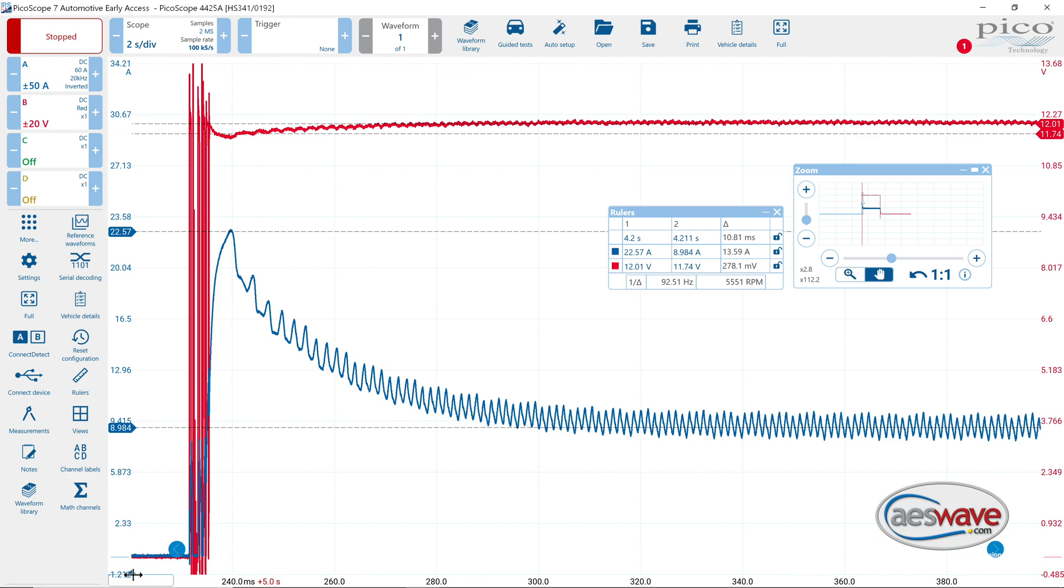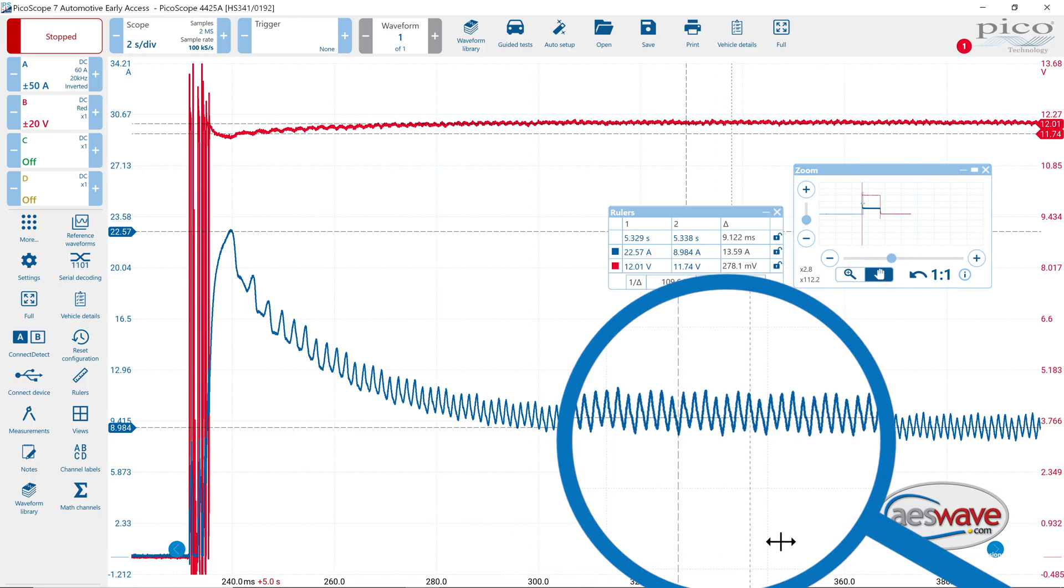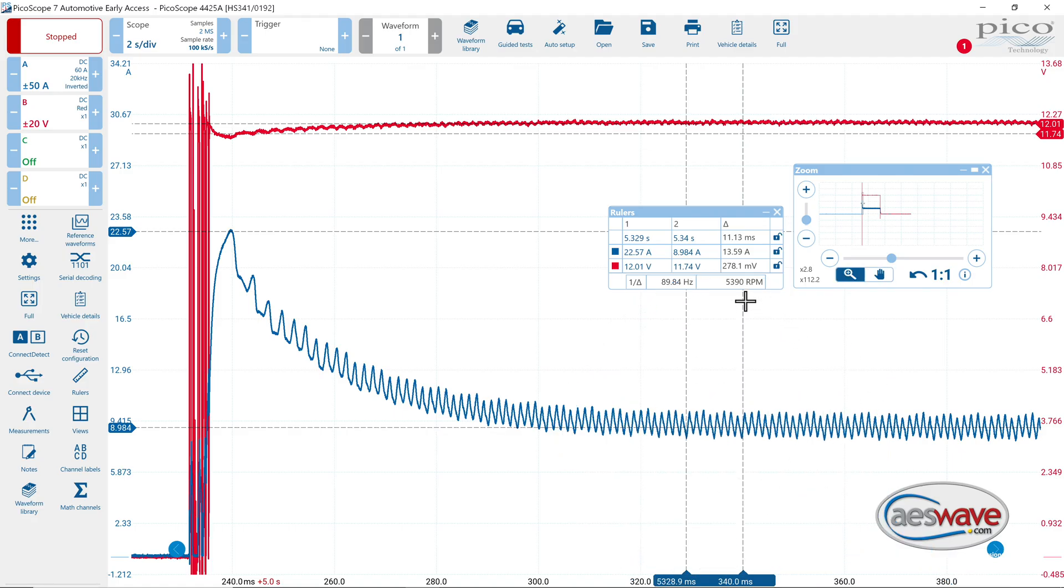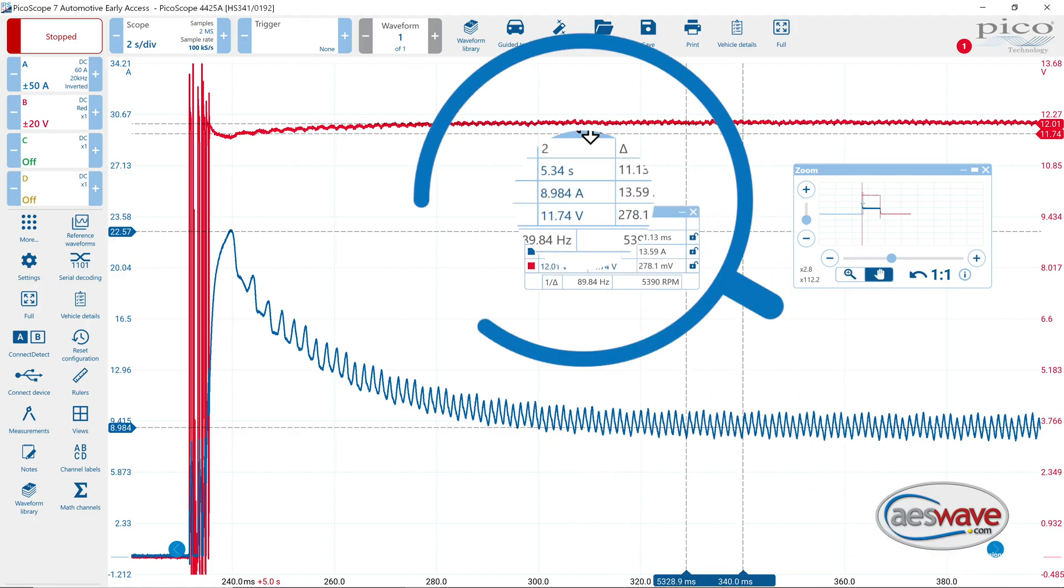We're going to grab a couple of cursors. We're going to pick two repeating items here, so I'm going to pick those two lower dips there. I'm going to count one, two, three, four, five, six, seven, eight. So that is one revolution of the pump, and you can see that we've got about 5390.